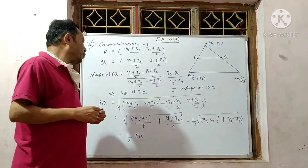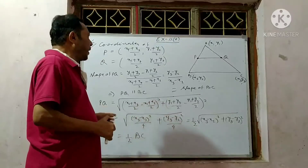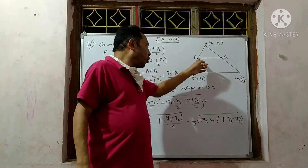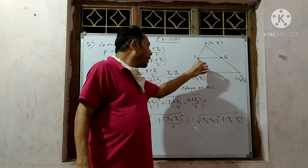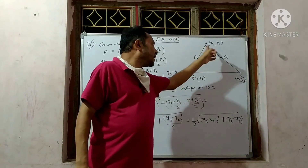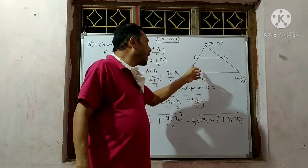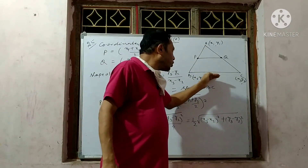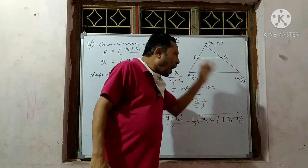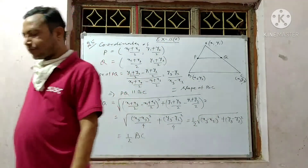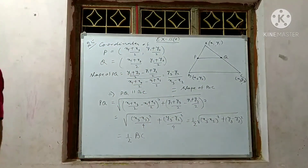Therefore, we can write the final statement: the line segment joining the midpoints of two sides of a triangle is parallel to the third side and half of its length. Both PQ ∥ BC and PQ = ½BC have been proved.